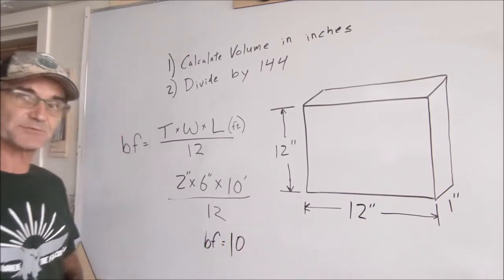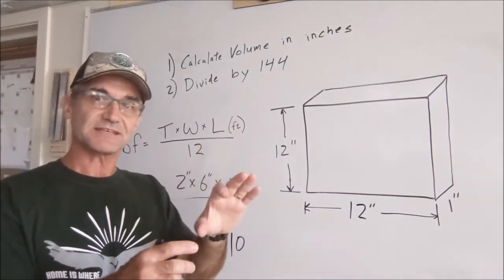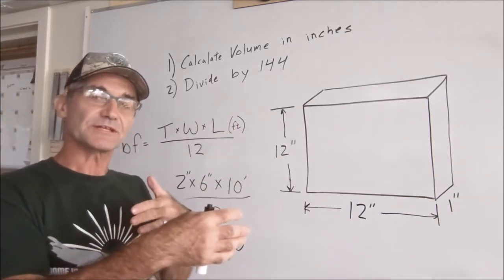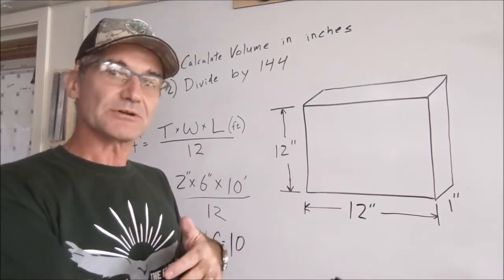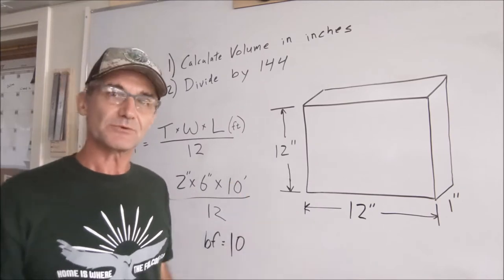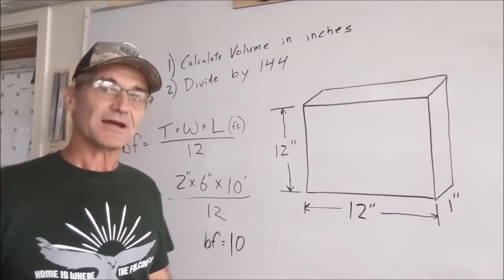And that kind of makes sense because a two by six is only six inches wide but two inches thick. So one linear foot of the board is equivalent to one board foot. A two by four would be different.